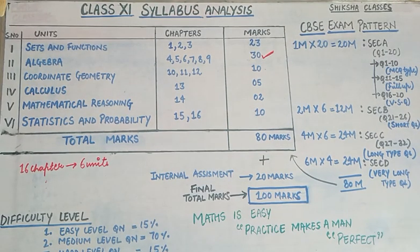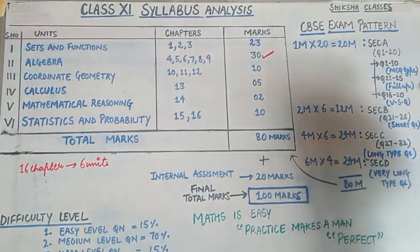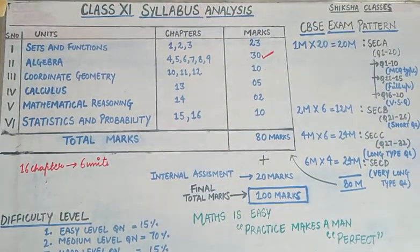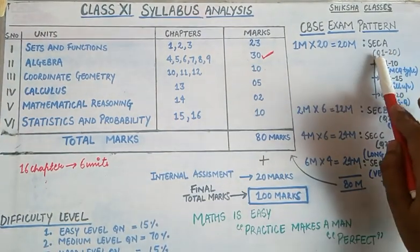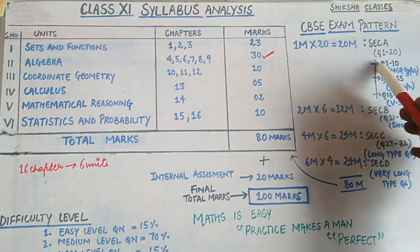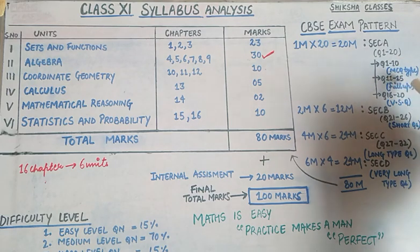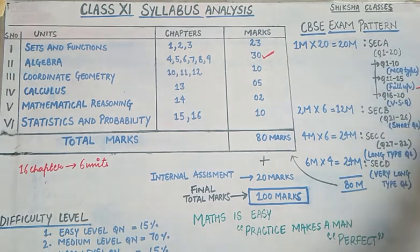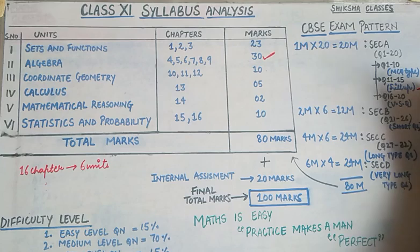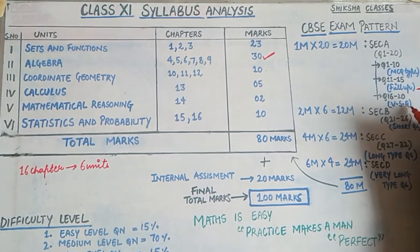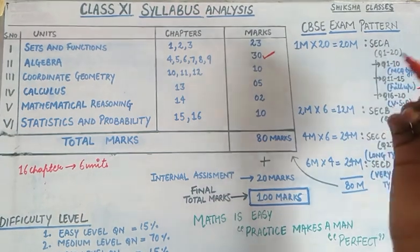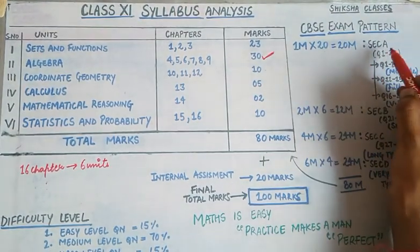Now let's talk about the CBSE exam pattern. The 11th marks paper has 4 sections: Section A, B, C, and D. Section A carries 1 mark, Section B carries 2 marks, Section C carries 4 marks, and Section D carries 6 marks. Section A has a total of 20 questions — questions 1 to 10 are MCQ type, questions 11 to 15 are fill-in-the-blank type, and questions 16 to 20 are very short answer type requiring one to two line answers. Section A total is 20 marks.